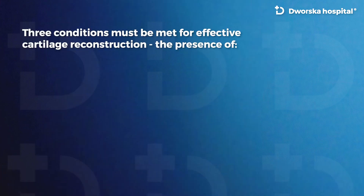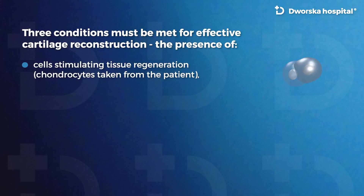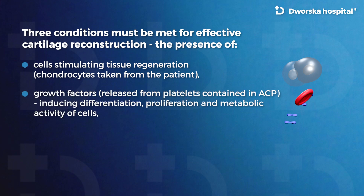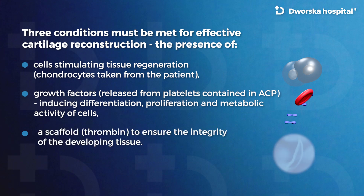Three conditions must be met for effective cartilage reconstruction: the presence of cells stimulating tissue regeneration — chondrocytes taken from the patient; growth factors released from platelets contained in ACP, inducing differentiation, proliferation and metabolic activity of cells; and a scaffold — thrombin — to ensure the integrity of the developing tissue.